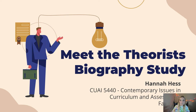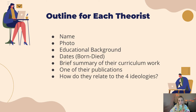And how they align with the four ideologies a little bit more. So let's go ahead and get started. This is my outline for each theorist as per the instructions for this assignment: their name, a photo, educational background, the dates born and died or if they're still alive, a brief summary of their curriculum work, one of their publications, and then how they relate to the four ideologies. I also tried to include a picture of one of their publications on all of them.